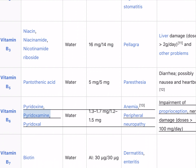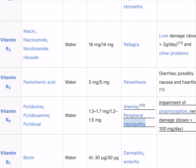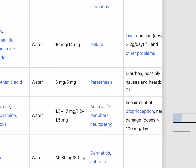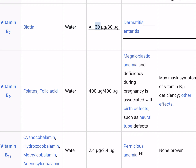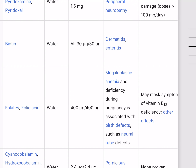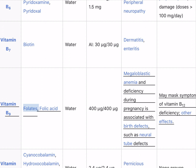Vitamin B6 (pyridoxine, pyridoxamine, pyridoxal) is water-soluble; 1.3 to 1.7 mg/1.2 to 1.5 mg recommended. Deficiency causes anemia; excess at doses over 100 mg/day causes peripheral neuropathy, impairment of proprioception, and nerve damage. Sources include meat, vegetables, tree nuts, and bananas. Vitamin B7 (biotin) is water-soluble; adequate intake 30 micrograms. Deficiency causes dermatitis and enteritis; sources include raw egg yolk, liver, peanuts, and leafy green vegetables.